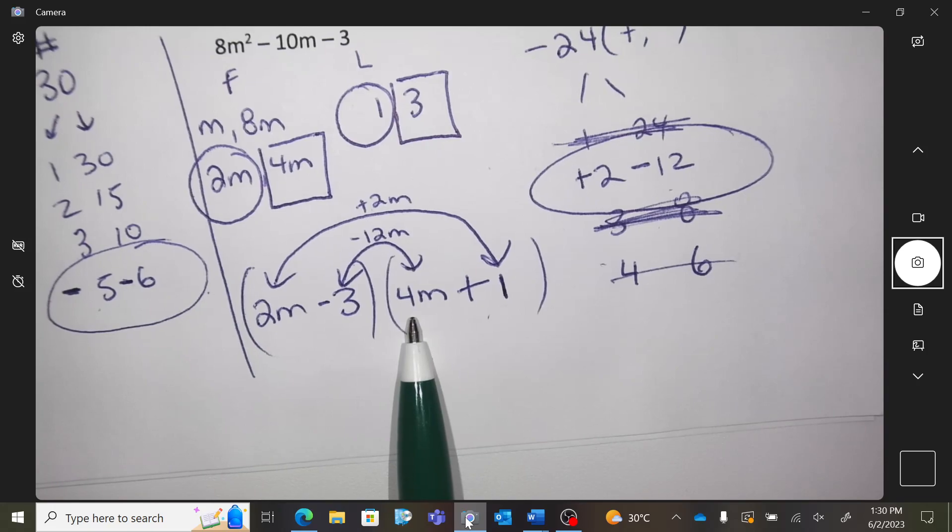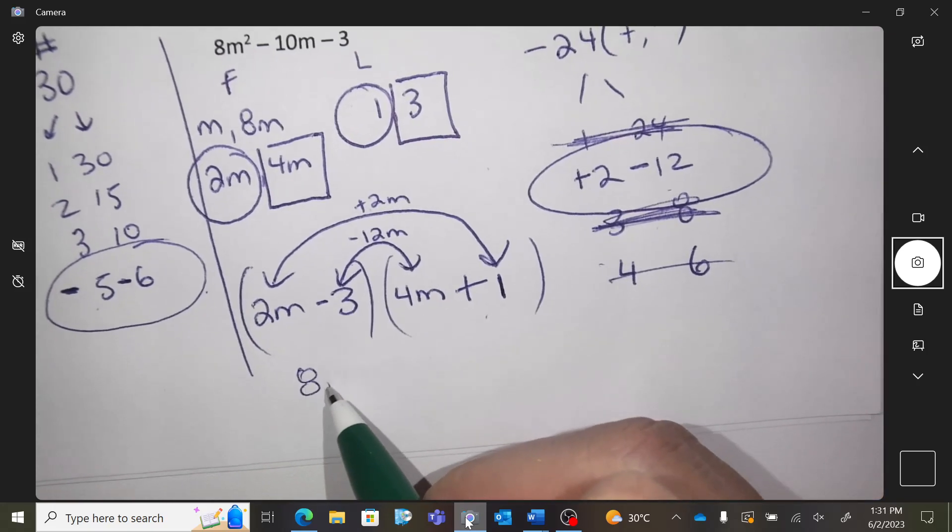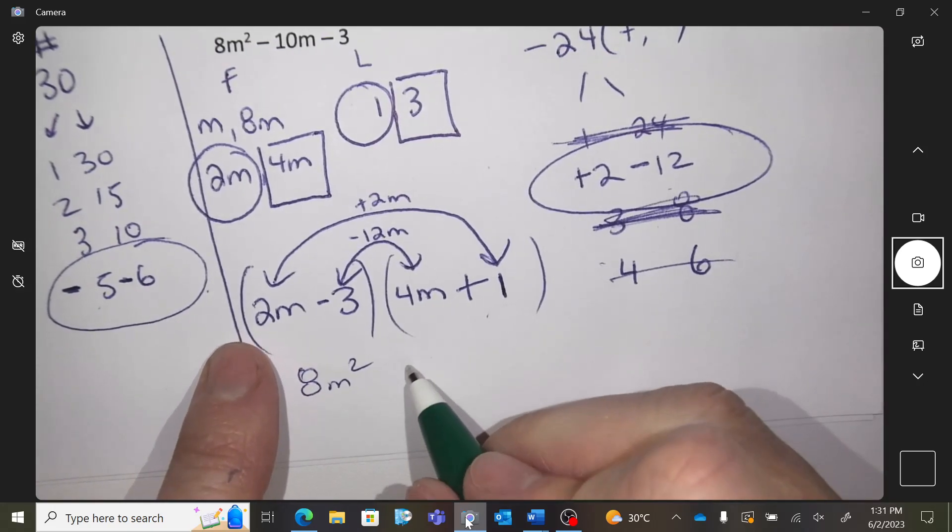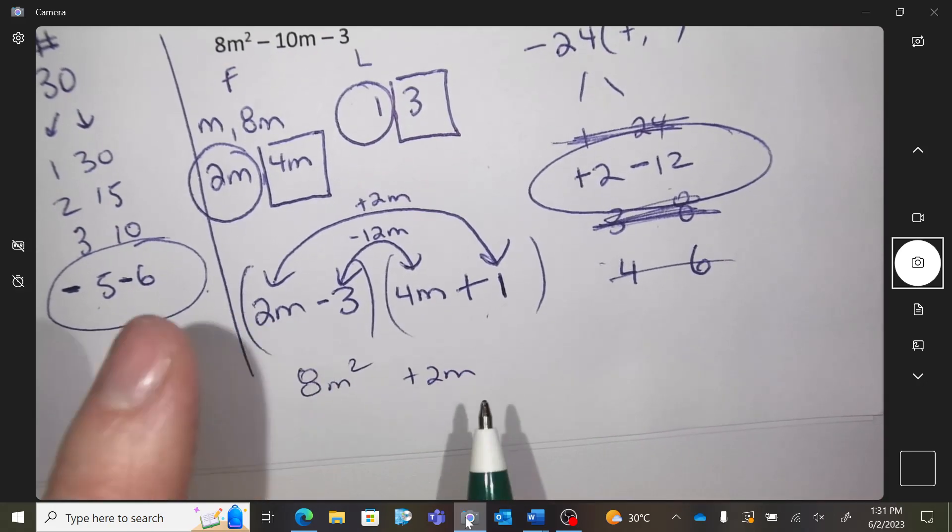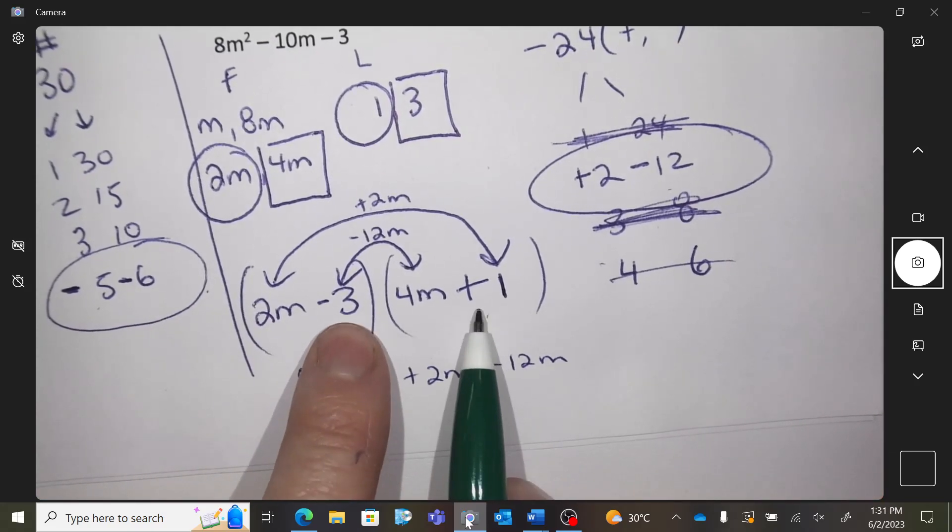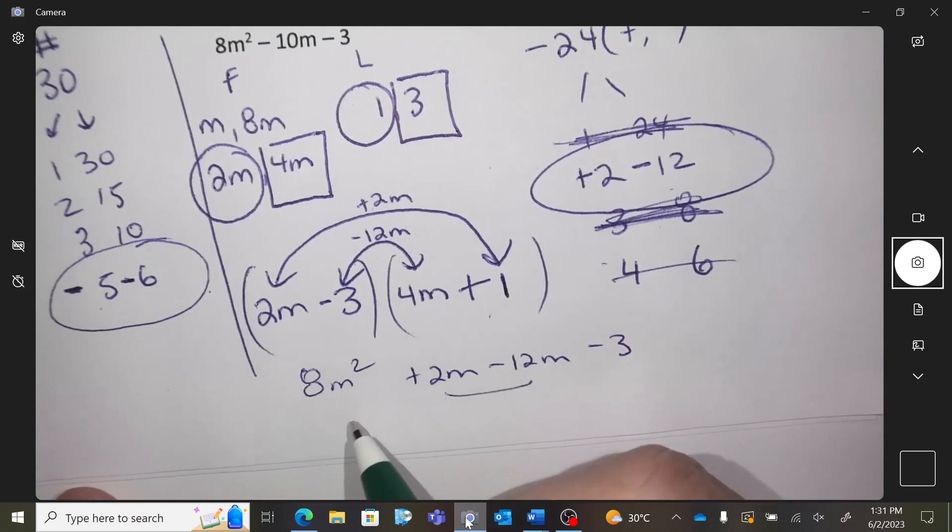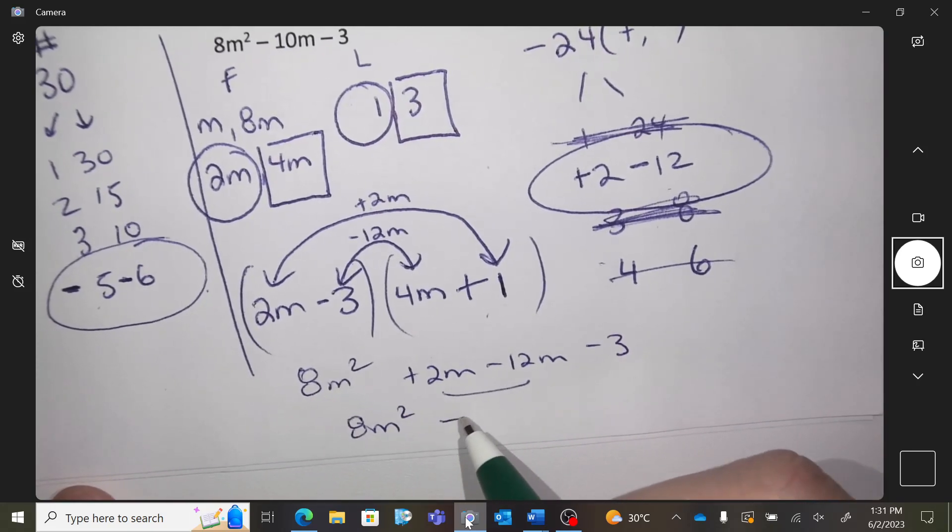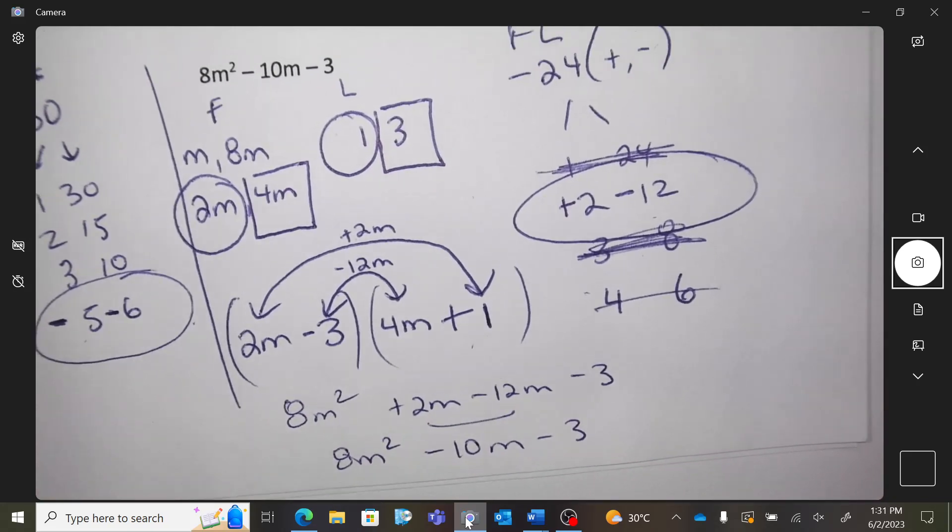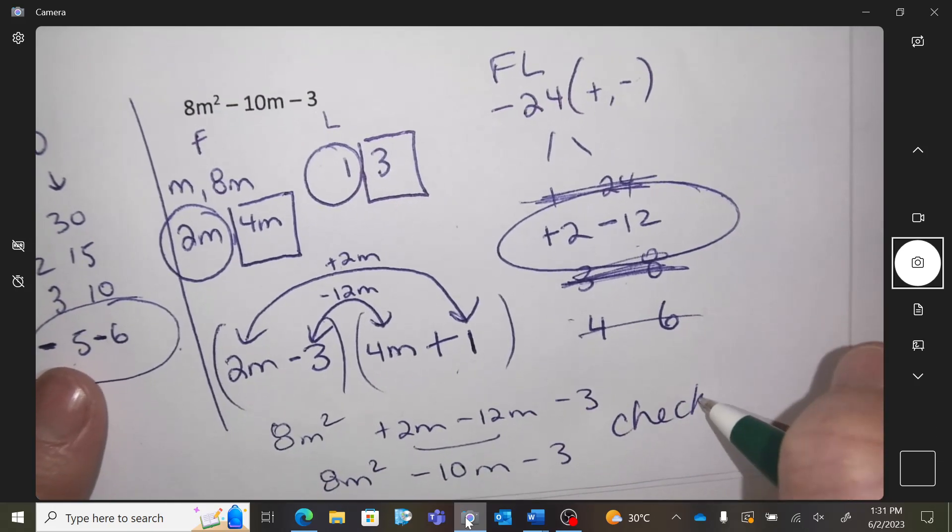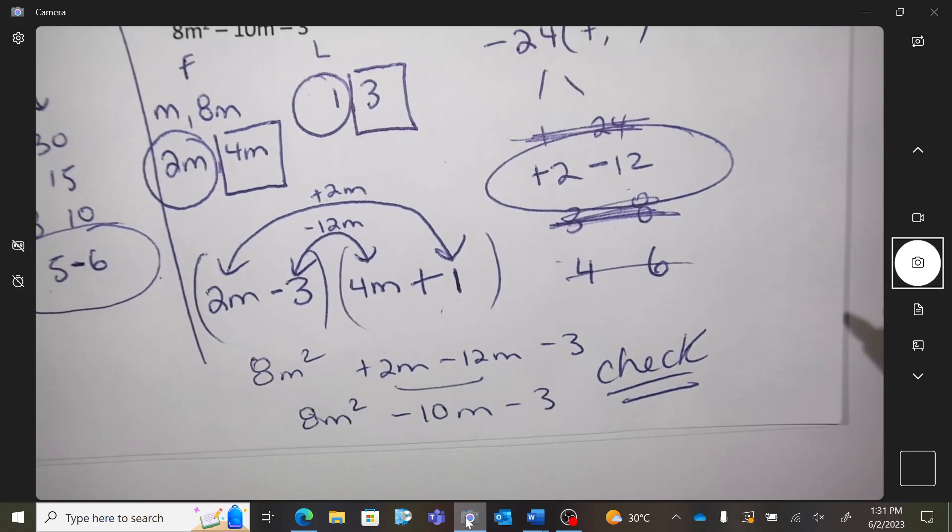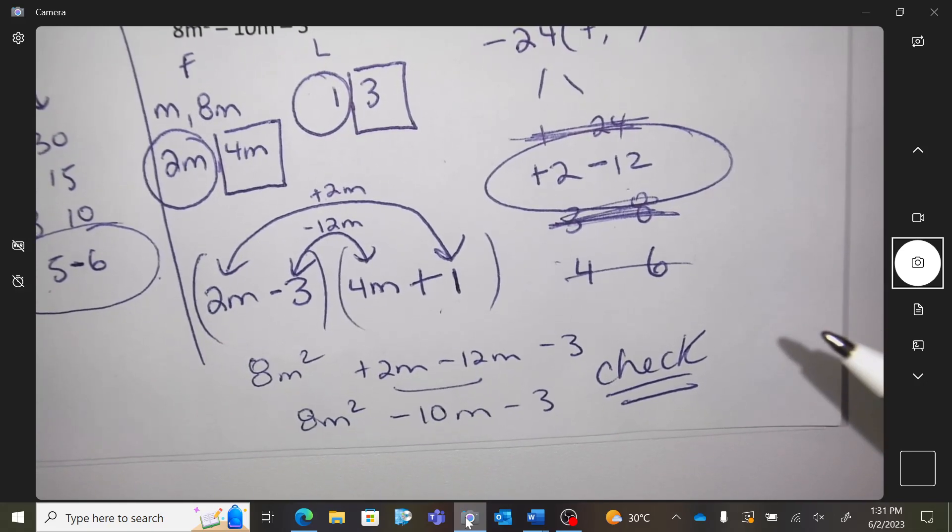So what do you get when you foil it? What is the first times the first? 8M squared. What are the outsides doing? Plus 2M. What are the insides doing? Negative 12M. What's the last? Negative 3. 8M squared minus 10M minus 3. Did you get back to the question? Yeah. You can check. So you should know if you're right. Because foiling and factoring are the opposite.